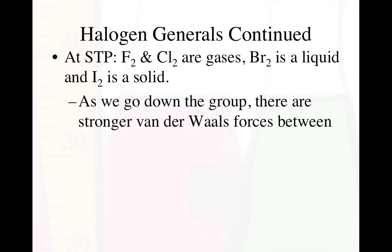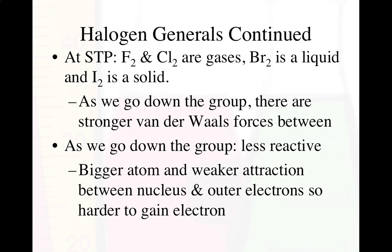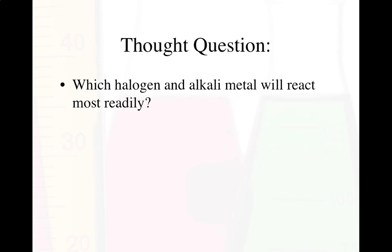As we go down the halogen group, there are stronger van der Waals forces holding molecules together, but they are less reactive. It's harder to overcome those intermolecular forces. We have bigger atoms with weaker attractions between the nucleus and outer electrons, so it's harder to gain electrons — there's less Z-effective nuclear charge to pull electrons toward it. Theoretically, if we had enough of them, the halogen and alkali metal that would react most readily would be francium with fluorine.